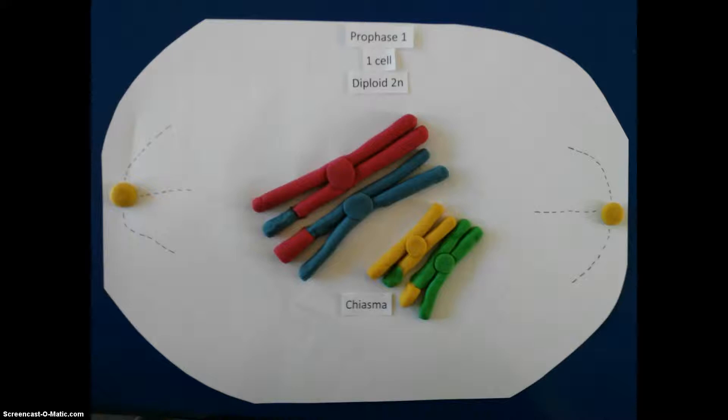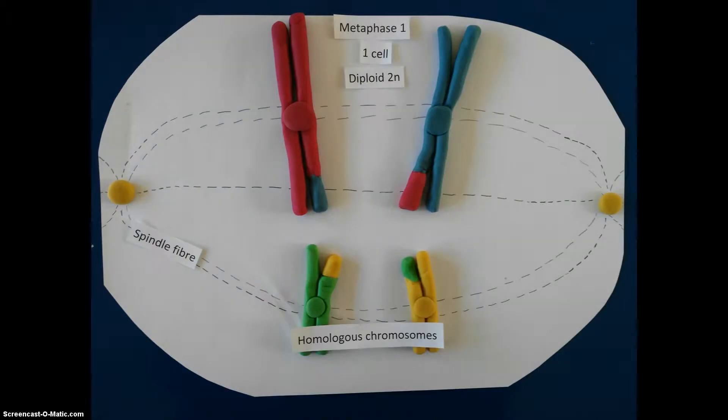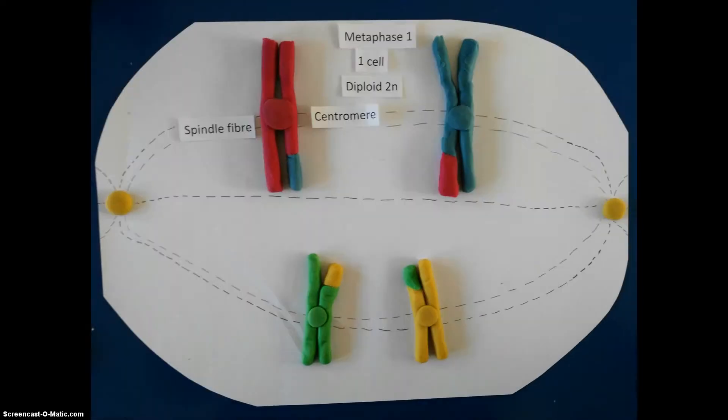In metaphase 1, the spindle fibers extend across the whole cell as the homologous chromosomes line up along the equator of the spindle in their homologous pairs. One chromosome from each pair lies on either side of the equator. The centromere of each chromosome attaches to the spindle fibers.